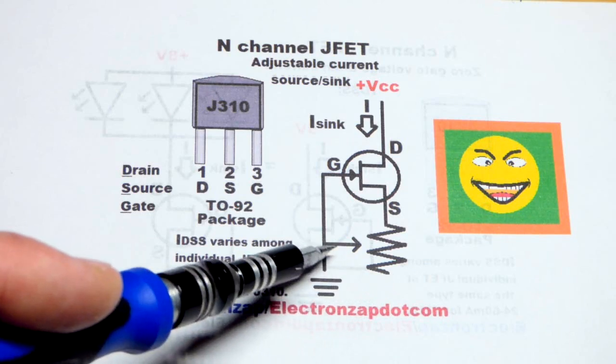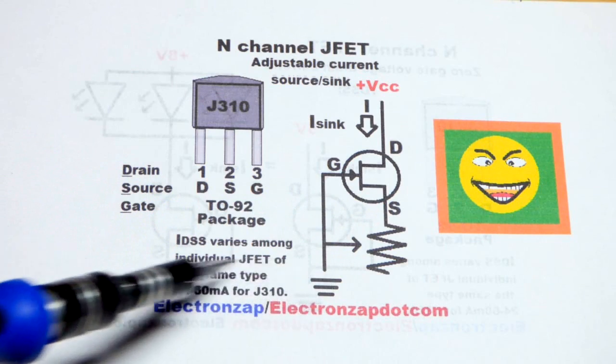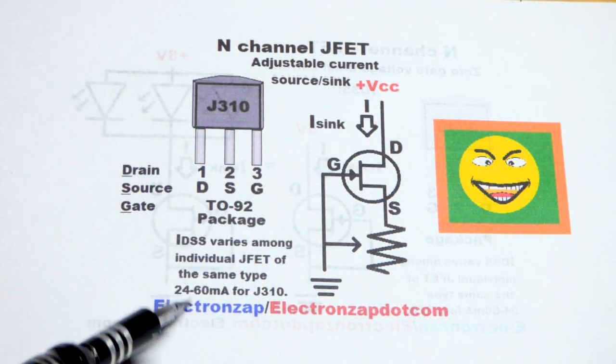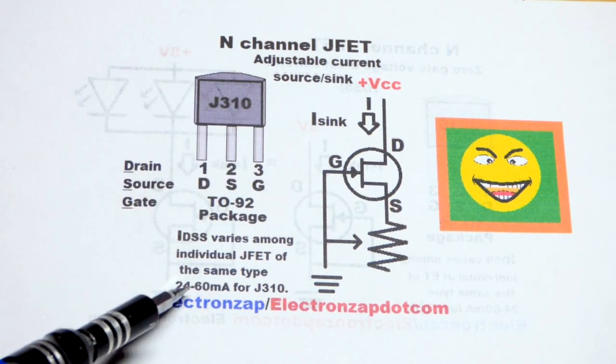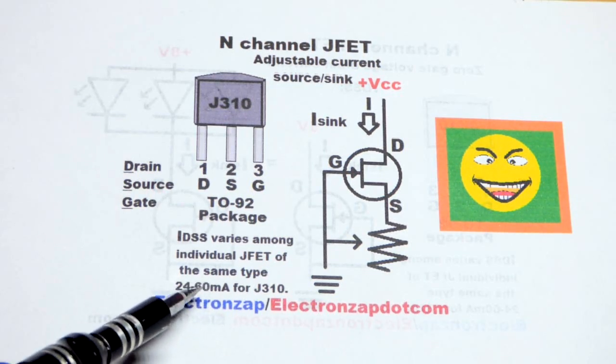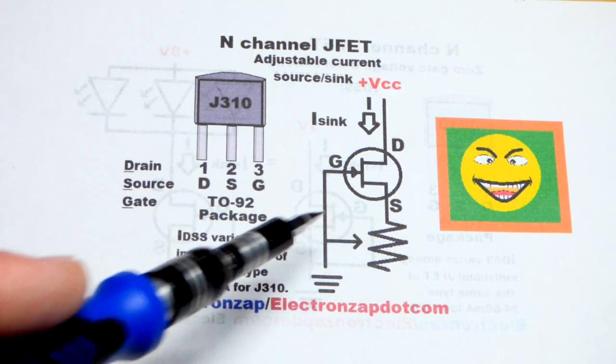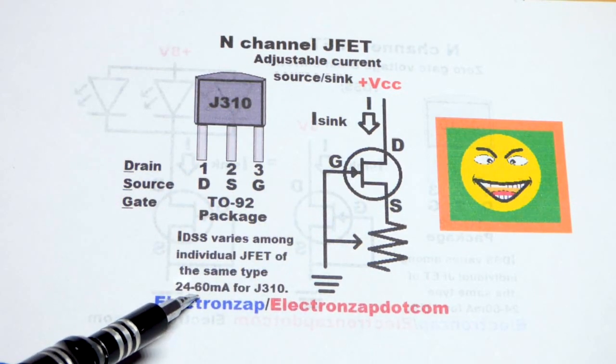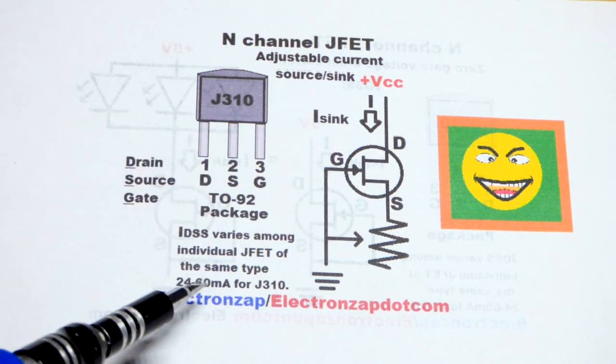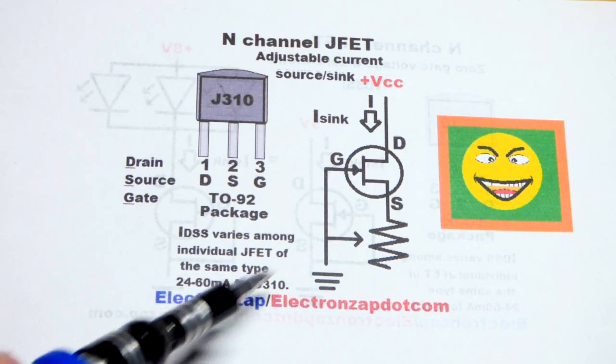That's in case the wiper goes bad you have the full resistance coming back. Last video both the gate and source were connected to ground and we got the IDSS - that's the maximum current that will flow through the transistor. For the J310 that's between 24 and 60 milliamps according to the datasheet. Last video the one I was using looked like 34 milliamps. This one I'm using this video looks like 38. Even with the same part number, if you tie the gate and source directly together, that maximum current is going to vary a bit from 24 to 60.